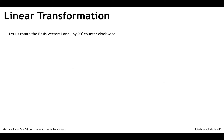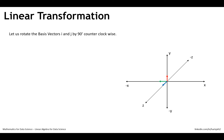Now let us rotate the basis vectors i and j by 90 degrees counterclockwise, like we did in the last video. This is what we get if we rotate the basis vectors i and j counterclockwise — this is the matrix representing this transformation, or the location of the basis vectors in this scenario. The first column represents the i basis vector, the second column represents j, and the third column represents k, and this is after transformation.